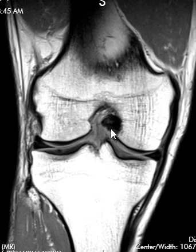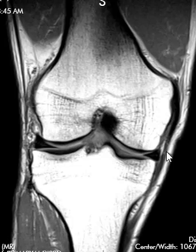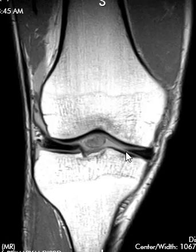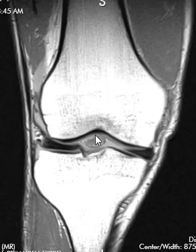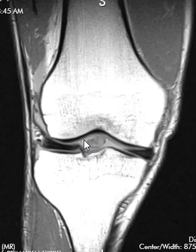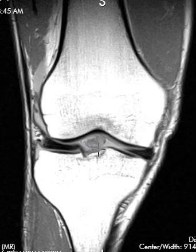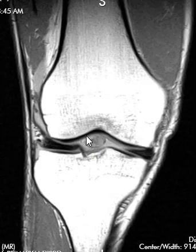Looking at the coronal image, going forwards, this funny-looking area anteriorly is again that 50% torn component that has flipped forwards into the central joint.